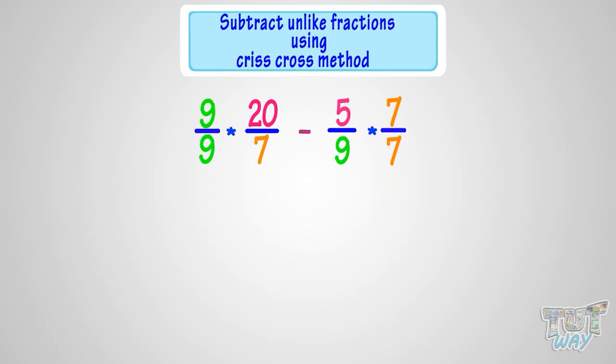20 multiplied with 9 we get 180. 9 multiplied with 7 we get 63. 5 multiplied with 7 we get 35.